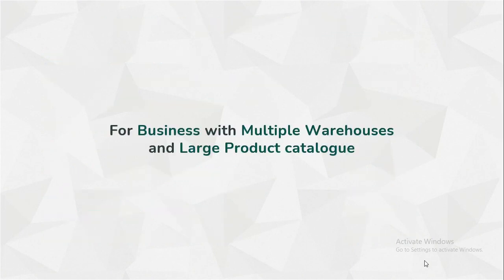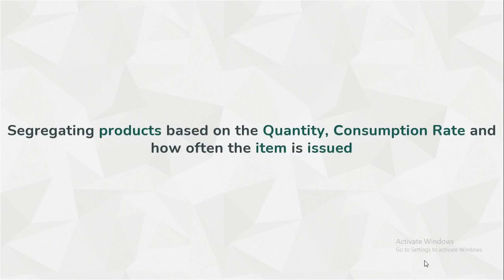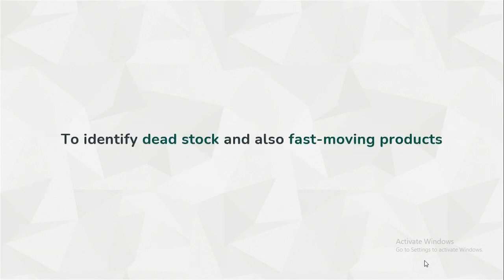For businesses with multiple warehouses and a large product catalog, it is necessary to segregate the products based on the quantity, the consumption rate, and how often the item is issued, so that you can identify the dead stock and also the fast moving products simultaneously.